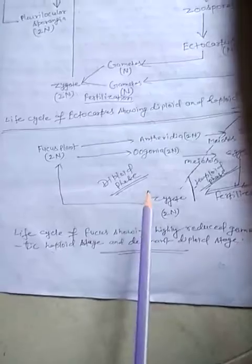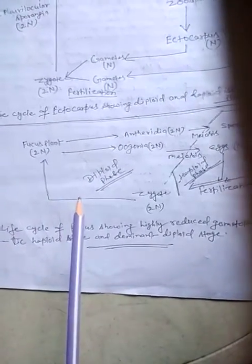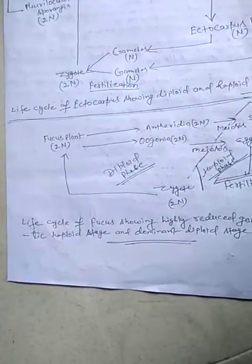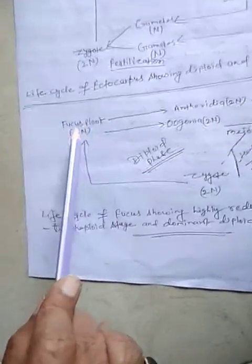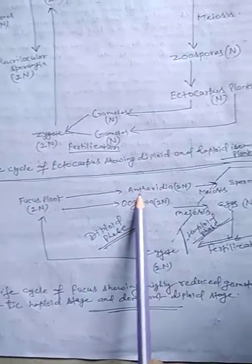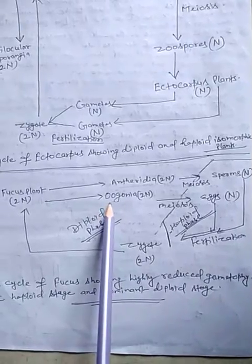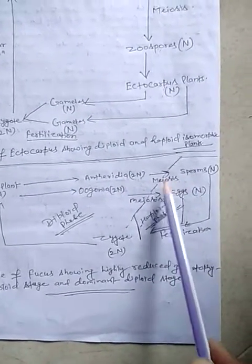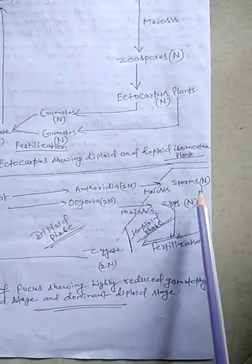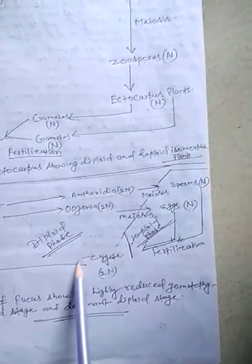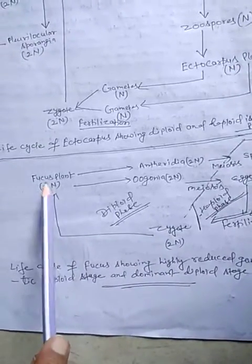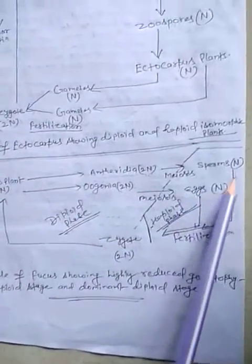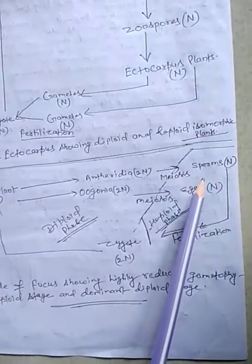Now we see the life cycle of Fucus. Fucus shows a highly reduced gametophytic haploid stage and a dominant diploid stage. The Fucus plant found in nature is the diploid plant, which produces the male reproductive organ — antheridia — and the female reproductive organ — oogonia. Both are diploid. In the antheridia and oogonia, gametes are produced by meiosis: sperms and eggs. These gametes fuse during fertilization to form a diploid zygote, which then develops into the Fucus plant.